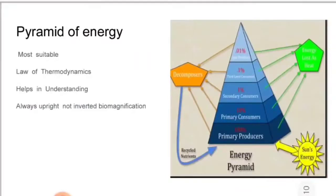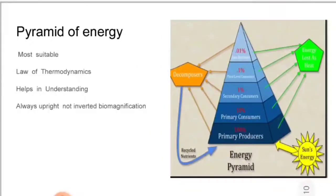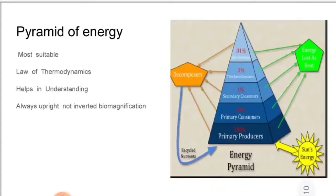Now let's talk about the pyramid of energy, which is always unidirectional — there is no inverted possibility. This is based on the laws of thermodynamics and is always upright. The energy pyramid reflects the law of thermodynamics with conversion of solar energy into chemical energy and heat energy at each trophic level. Energy is lost at each transfer to another trophic level, hence the pyramid is always upward with a large energy base at the bottom.